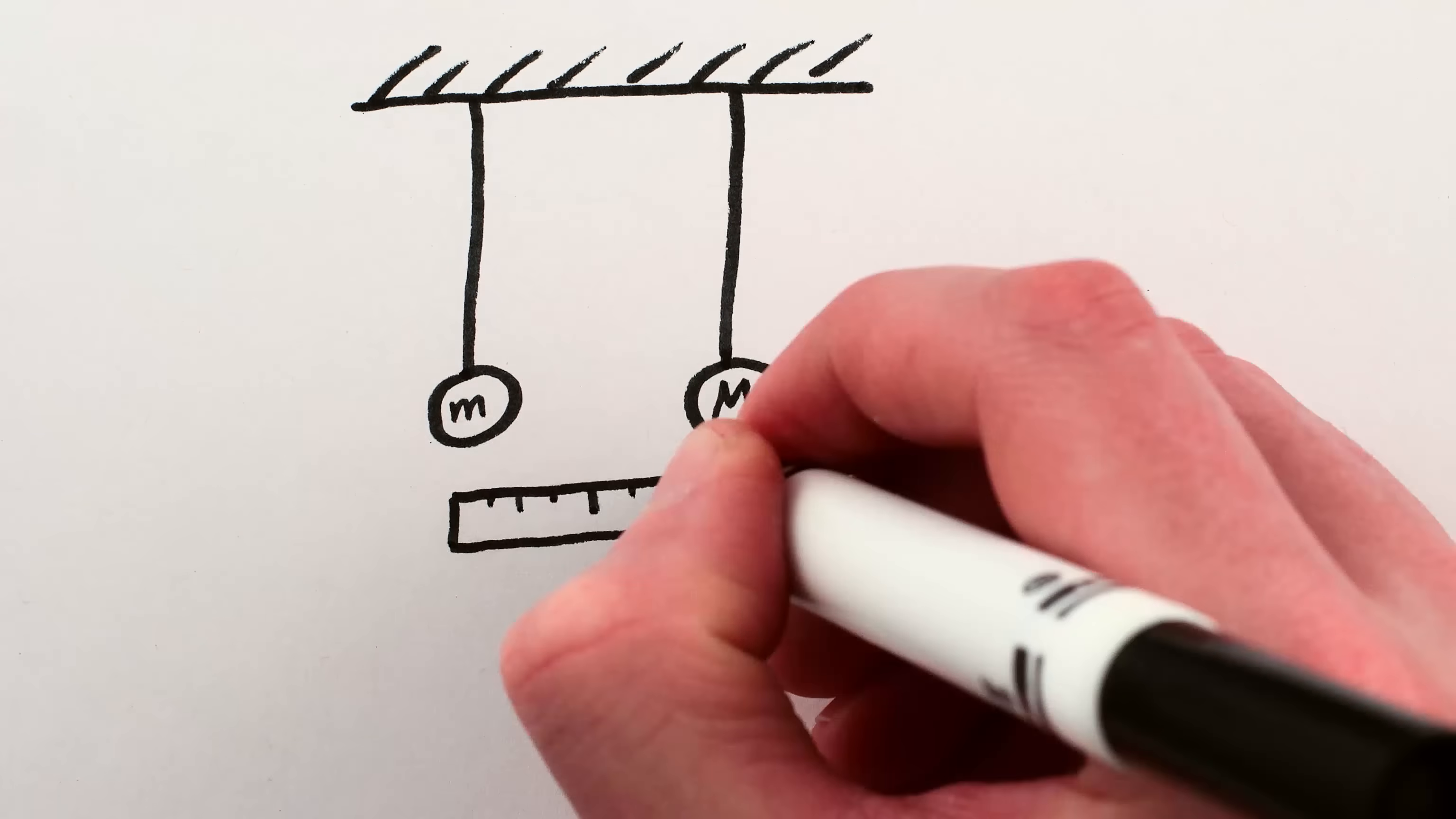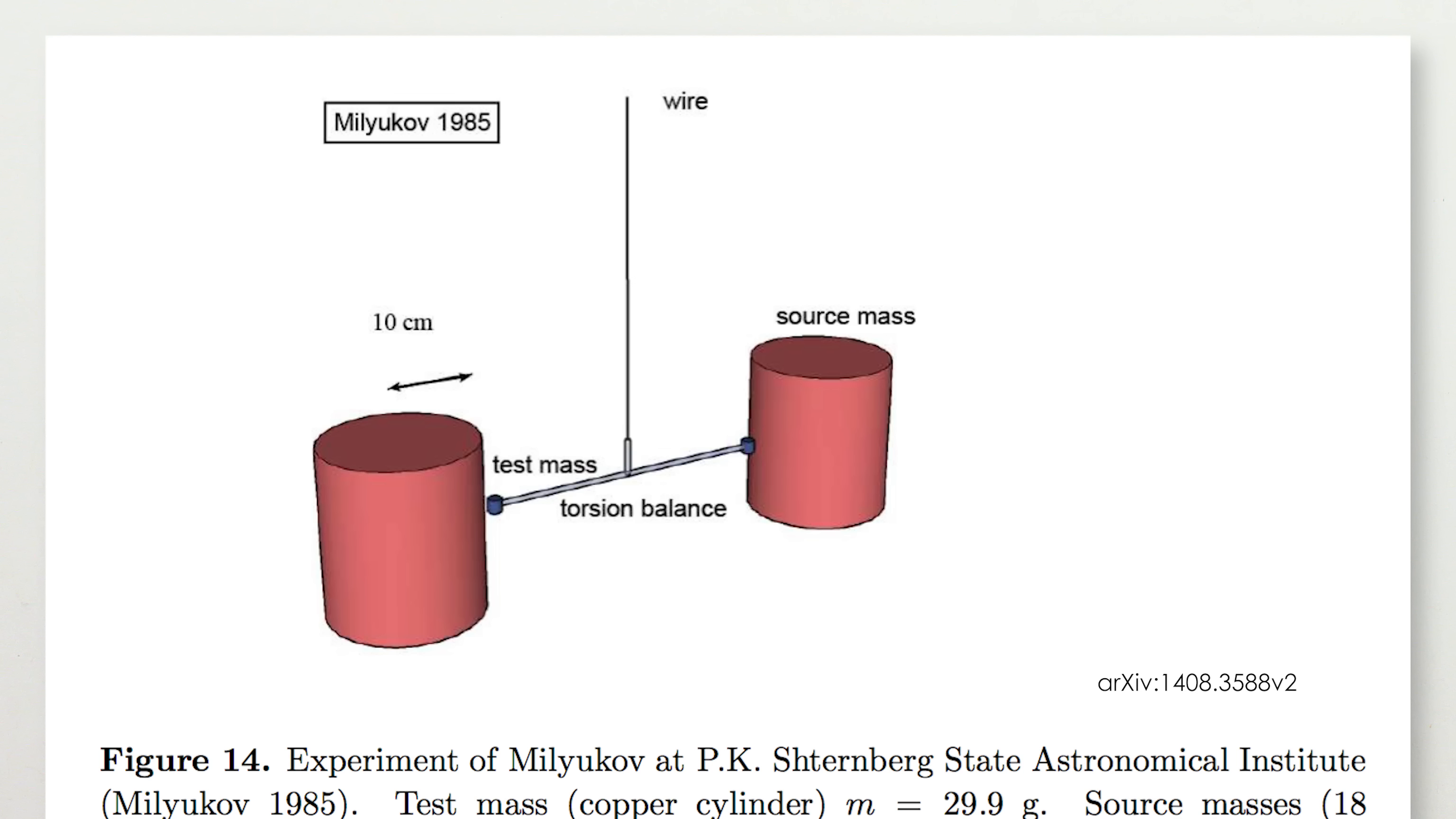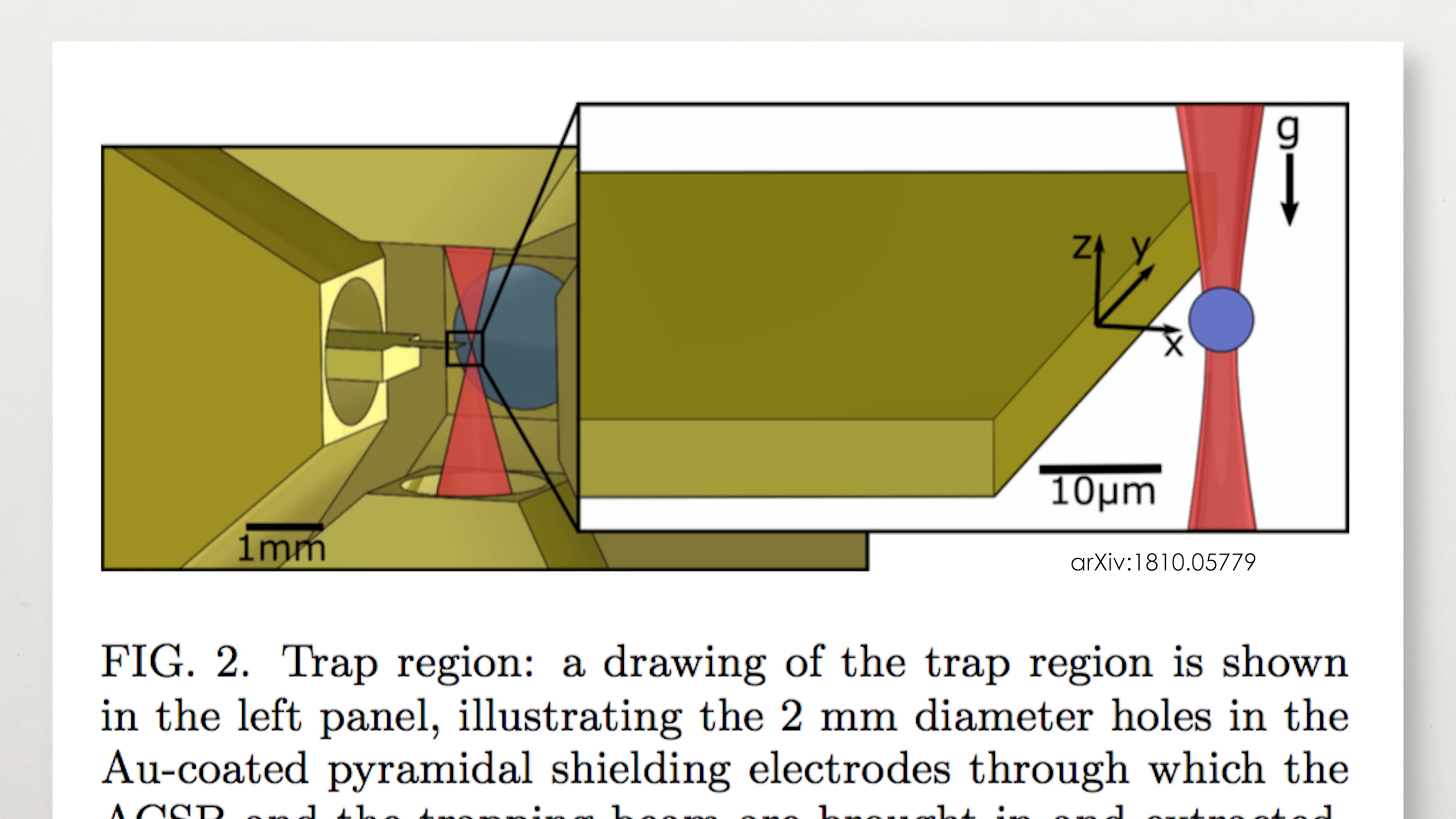But testing Newton's Law of Gravitation at these scales requires very delicate experiments, like very sensitive oscillating pendulums that oscillate slightly differently if there's a heavy mass nearby and can thus measure the gravitational force with great precision, or incredibly finely controlled lasers that simultaneously levitate and measure the positions and forces on tiny little beads of glass. These can measure ridiculously faint forces, like zepto-Newtons.